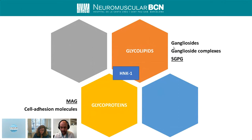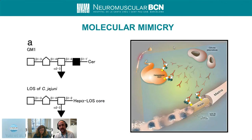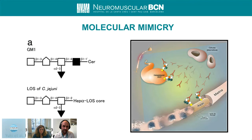One important contribution of this field to immunology overall is the concept of molecular mimicry. In Guillain-Barré syndrome, the molecular mimicry mechanism of pathogenicity is probably the best described of all autoimmune disorders. A lipo-oligosaccharide at the bacterial wall of Campylobacter jejuni has a very similar structure to the GM1 ganglioside present in the axons of peripheral nerves, eliciting a cross-reactive immune response that ends up in nerve pathology and disease. This is the paradigmatic example of molecular mimicry.